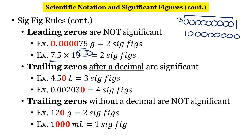Trailing zeros — zeros after a decimal — are significant. If our equipment reads 4.50, that zero matters because our equipment is precise to the hundredths place. So not only do the 4 and the 5 count, but that trailing zero also counts. This applies after a decimal point. In the second example, we have leading zeros in front that don't count, then a 2, a sandwiched zero, a 3, and then a trailing zero — giving us four significant figures.